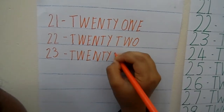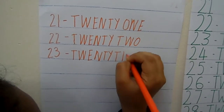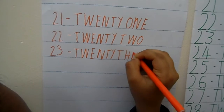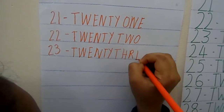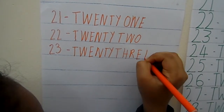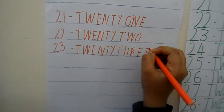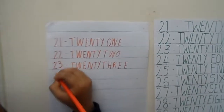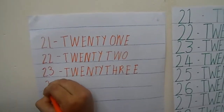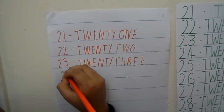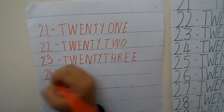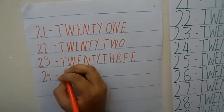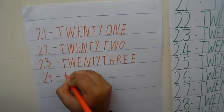Now what is the next number? 24. So let's see how to write it. First 2, then 4. Now let's see the number name of 24: T, W, E, N, T, Y, F, O, U, R.